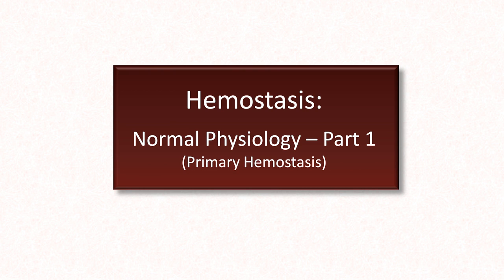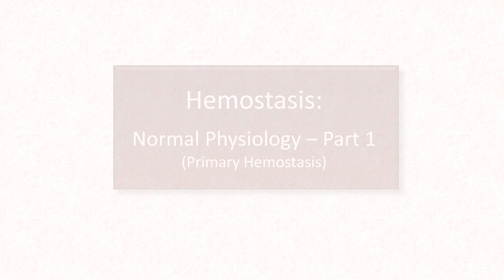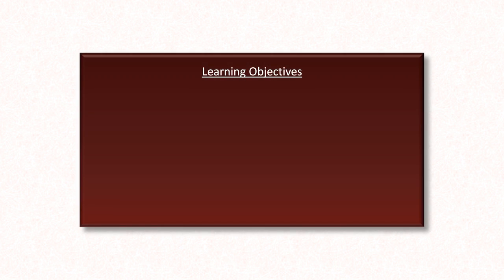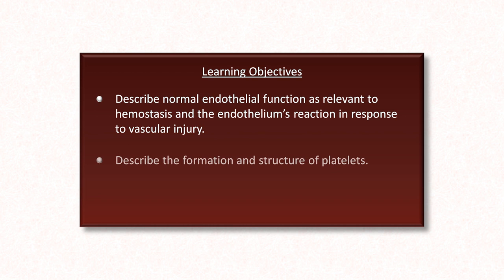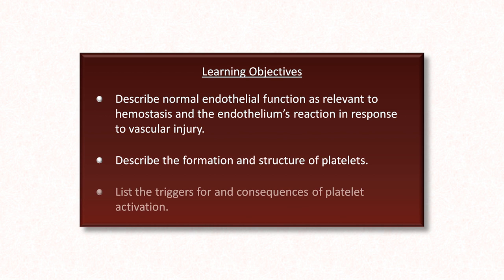This is the second lecture in this series on hemostasis and will be part 1 of a description of normal physiology, focusing on primary hemostasis. The learning objectives of this video will be: first, to describe normal endothelial function as relevant to hemostasis and the endothelium's reaction in response to vascular injury; next, to describe the formation and structure of platelets; and last, most of the video will focus on the triggers and consequences of platelet activation.